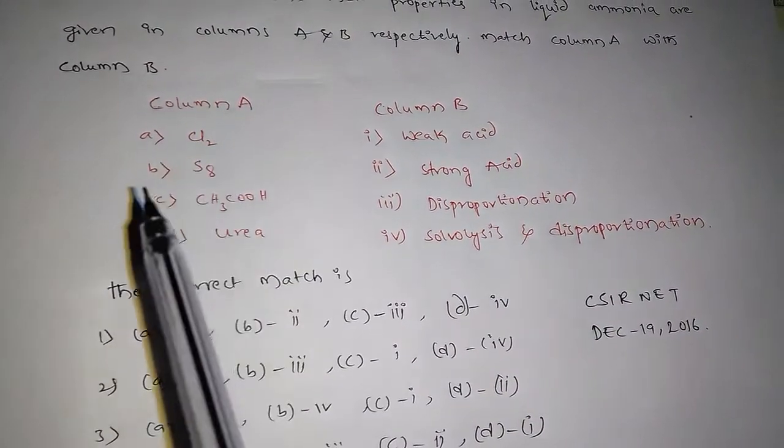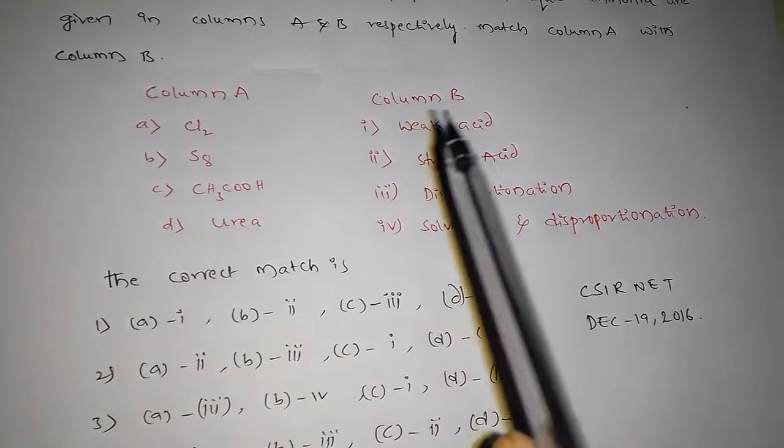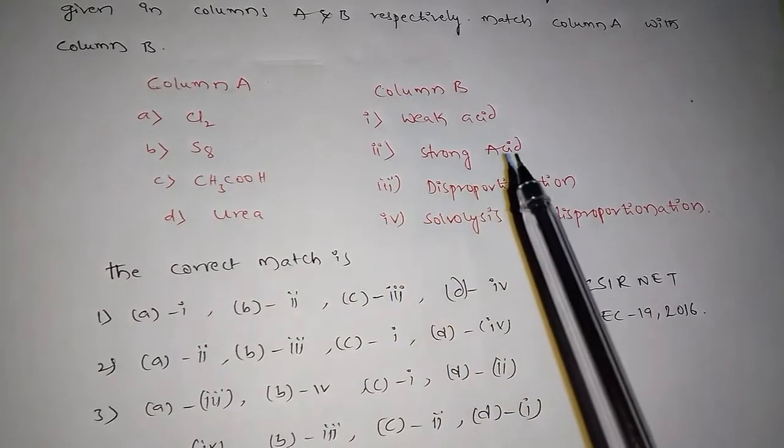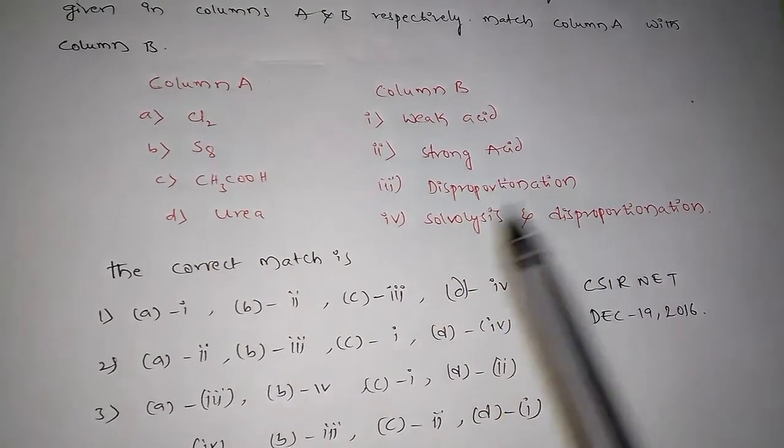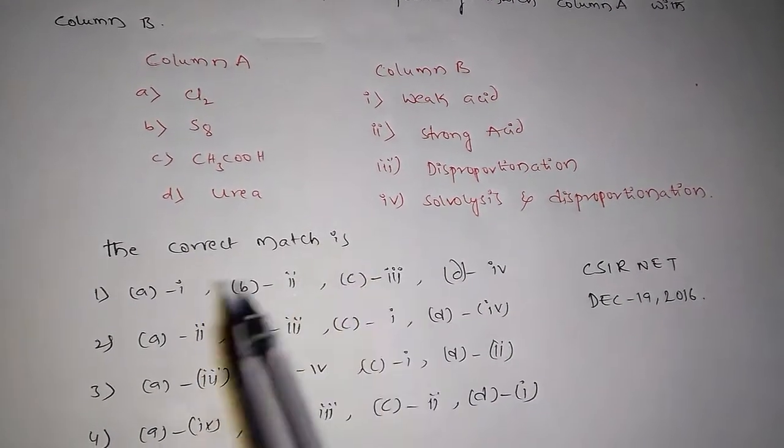Column A contains: A - Chlorine, B - S8, C - Acetic Acid, D - Urea. And column B contains: first option weak acid, second option strong acid, and third option disproportionation and fourth option sololysis and disproportionation.